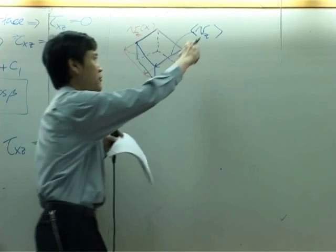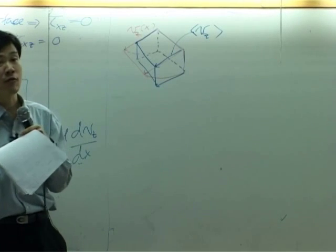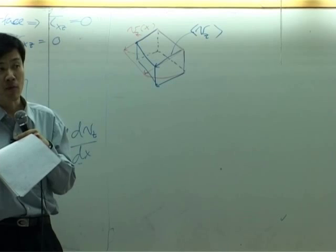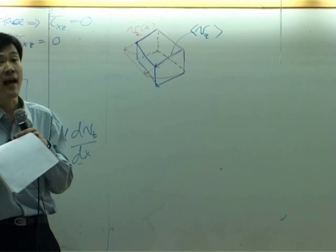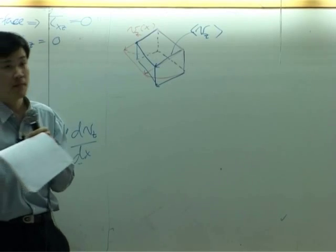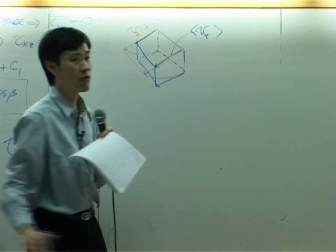This value will be later used for macroscopic balance. Because when you do unit operation one, when you do the Bernoulli equation balance, you take the average value. That would be used in macroscopic balance.